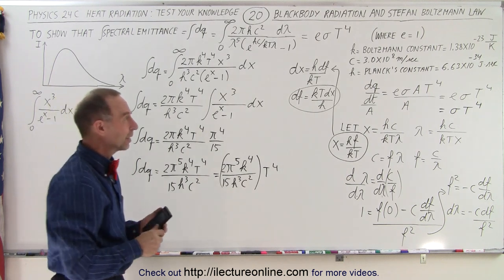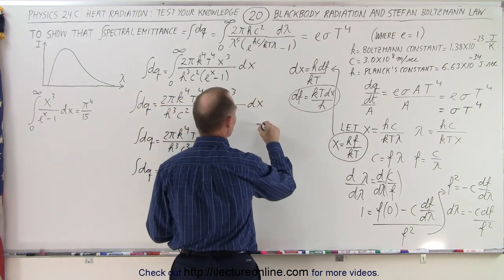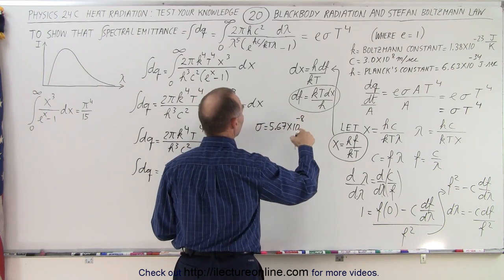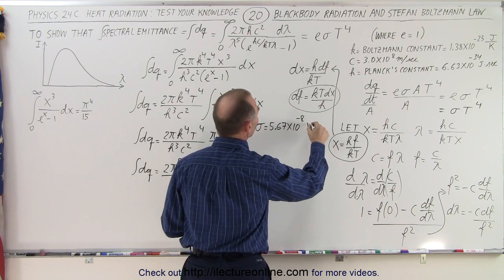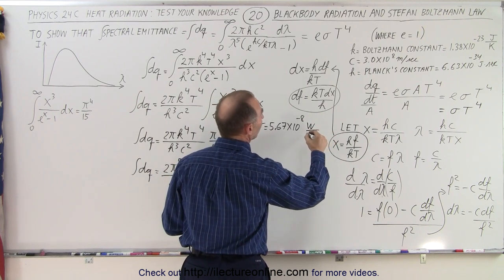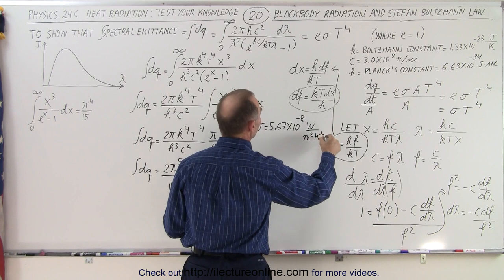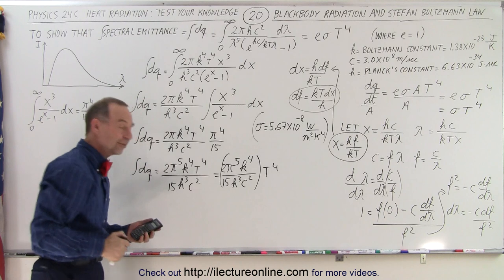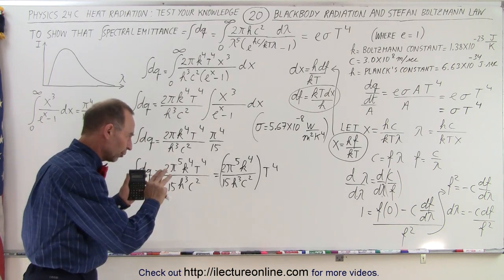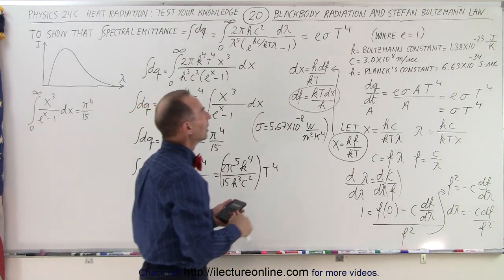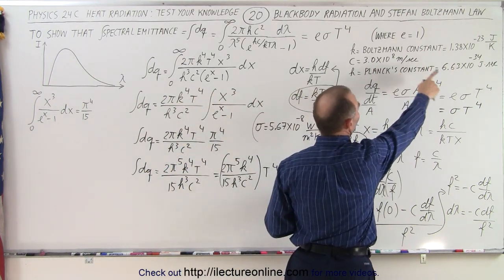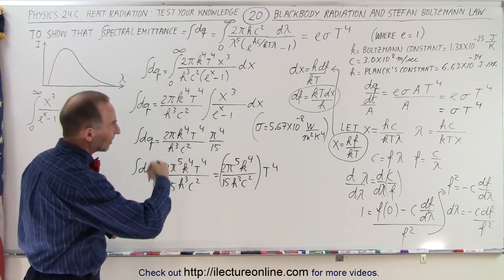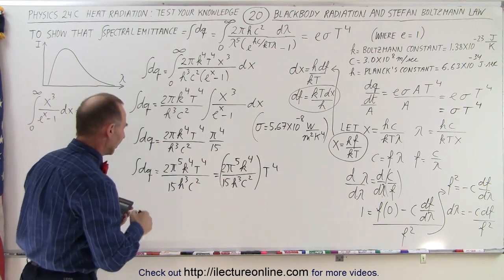And if you remember what that constant was, we're looking for σ is equal to 5.67 times 10 to the minus 8, and that would be watts per meter squared per kelvin to the 4th power. So this is what we're looking for to be contained within the parentheses here. Let's find out if that's true. Of course, we're going to have some slight rounding errors because Planck's constant is not exactly that, it's 6.626 times 10 to the minus 34, and c is not exactly 3 times 10 to the 8, but we'll get close enough I think.